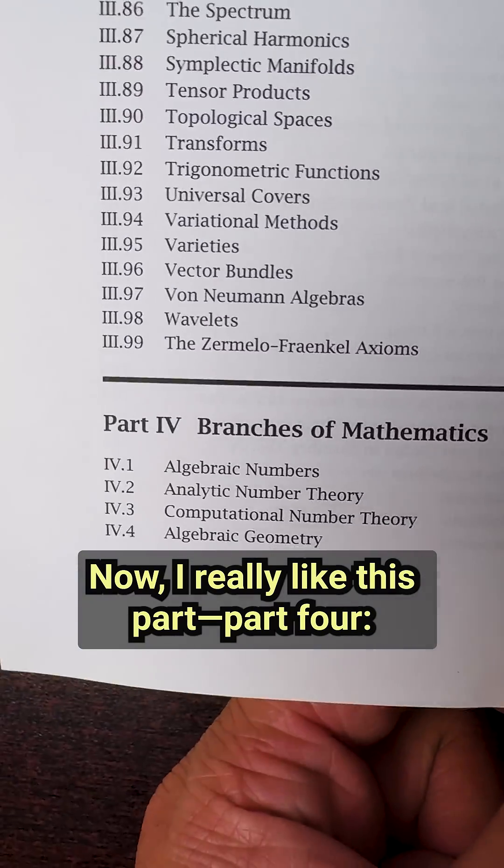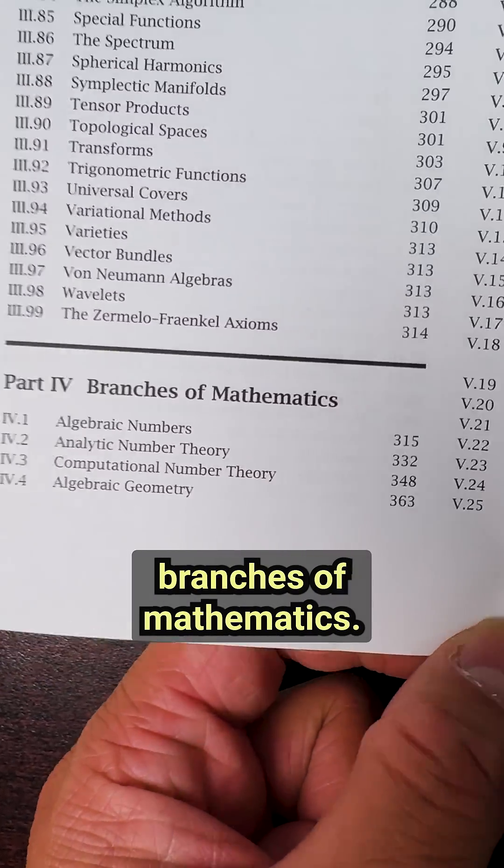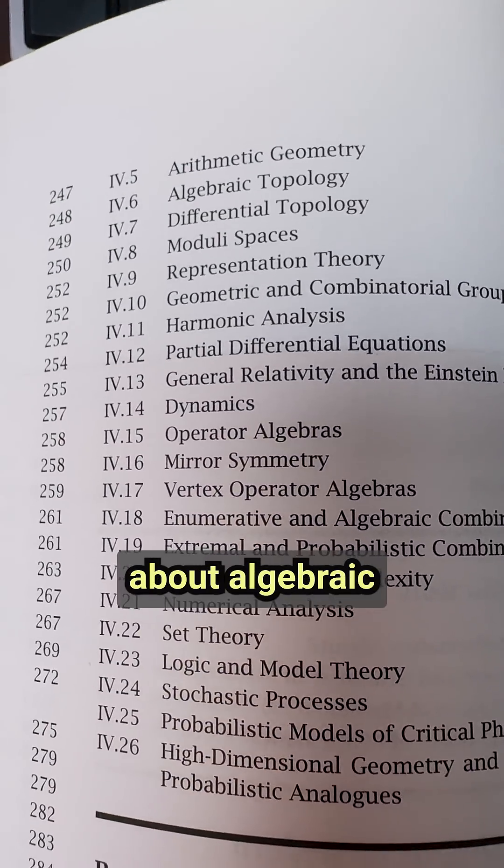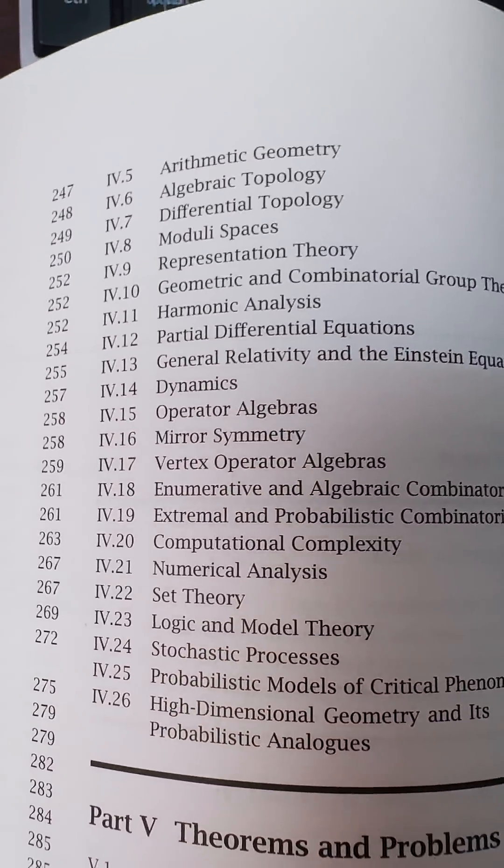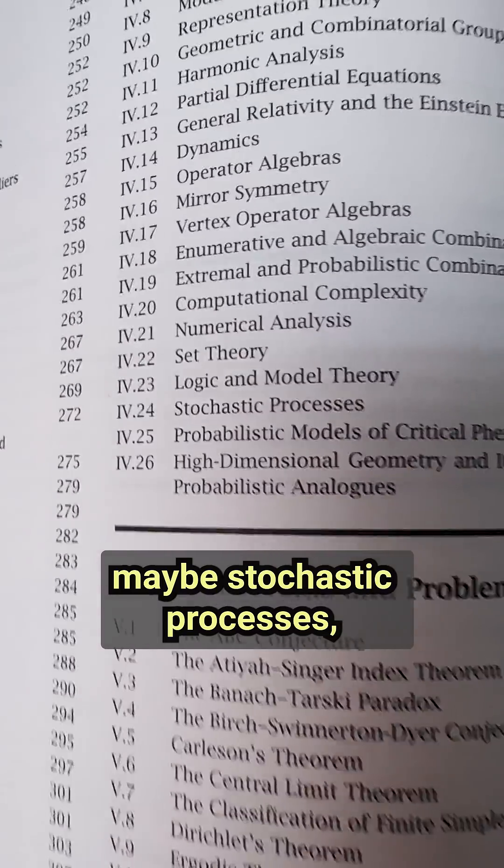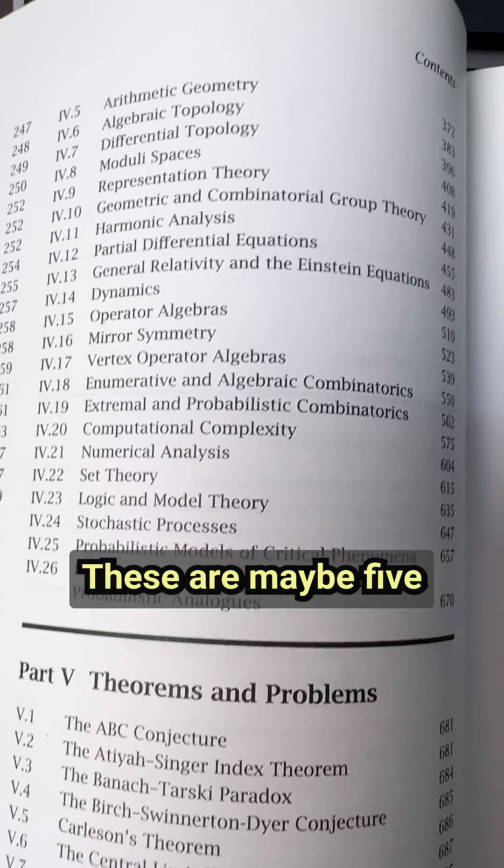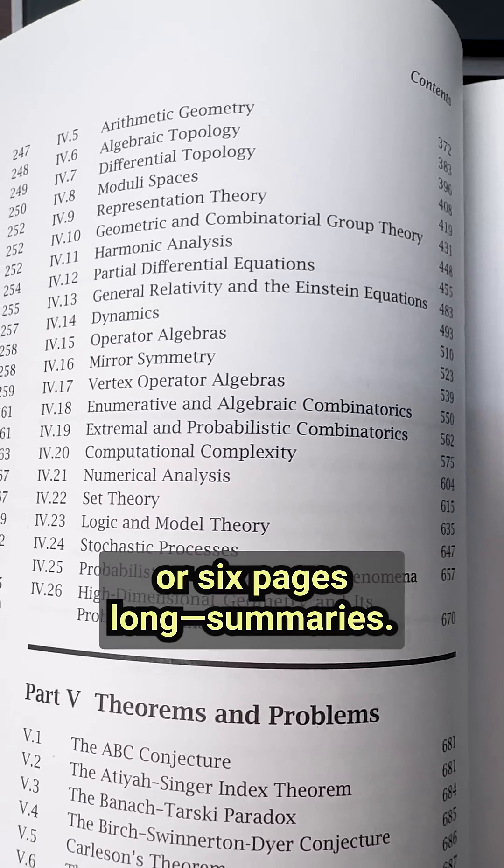Now, I really like this part, Part 4, Branches of Mathematics. For example, if I'm interested in knowing about algebraic topology or differential topology or maybe stochastic processes, these are maybe five or six page long summaries.